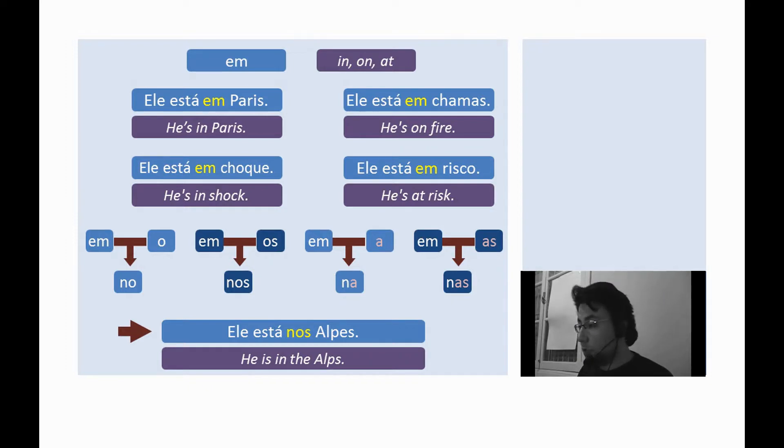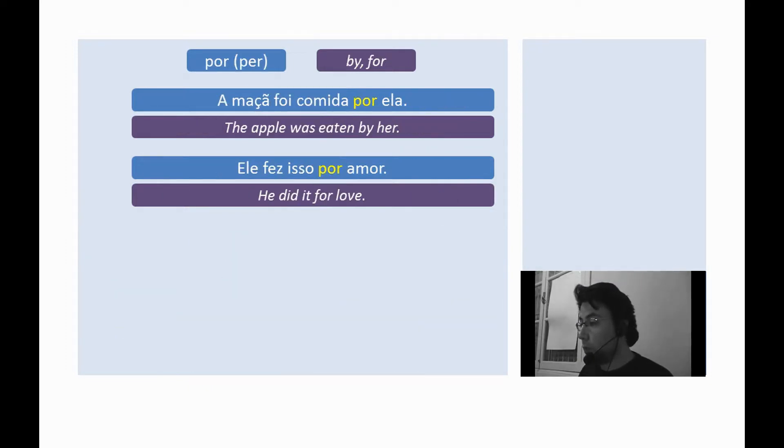Now, the preposition por. Por. In its ancient form, per. It can be translated as by or for. Examples. A maçã foi comida por ela. The apple was eaten by her. Ele fez isso por amor. He did it for love.